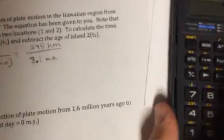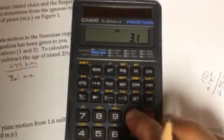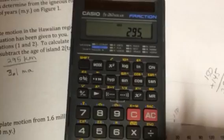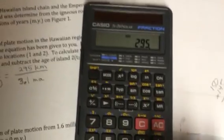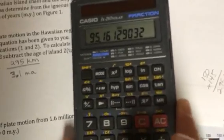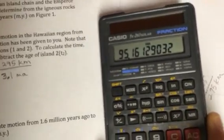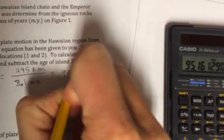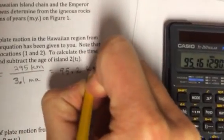So we would come over here, 295 divided by 3.1. Okay, and that tells us that the rate of spreading is 95.2 kilometers per million years.